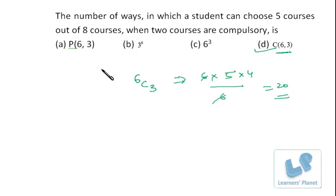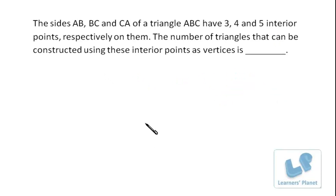Okay, now friends, let's see this question. The question is from previous year papers of CAT, so let's do it. The sides AB, BC, and CA of a triangle ABC have three, four, and five interior points respectively on them.